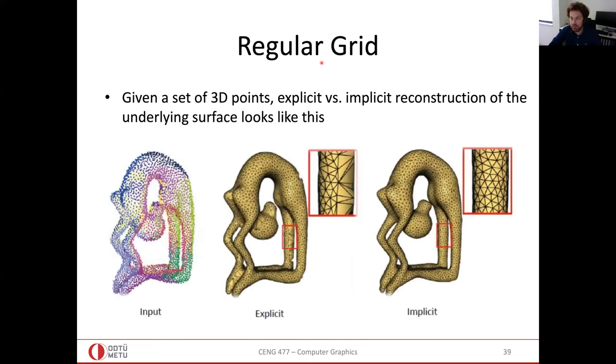So here is that structure, spatial structure called grid, regular grid. I will utilize this structure to define a shape implicitly, like this woman here. And the input point clouds would be this. So this is also a representation of this model.